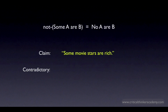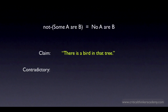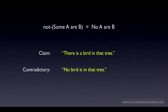So if the claim is 'some movie stars are rich,' the contradictory is 'no movie stars are rich.' Now, let's say the claim is 'there is a bird in that tree.' Remember, this is equivalent to 'there is at least one bird in that tree,' which is equivalent to 'some bird is in that tree.' So the contradictory is 'no bird is in that tree,' or 'there is no bird in that tree.'